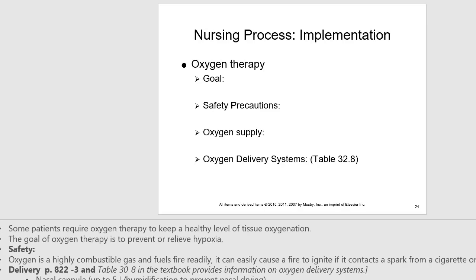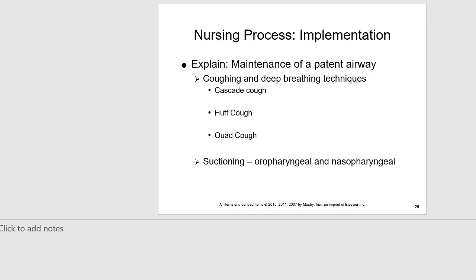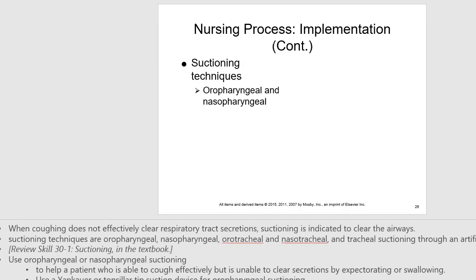Safety precautions with oxygen include no smoking around oxygen and avoiding petroleum products near the patient, as they are flammable. Oxygen can be humidified for patients on it long-term to improve comfort. Suctioning techniques and teaching different types of coughing — cascade, huff, and quad cough — can also be used. Suctioning was covered in lab.